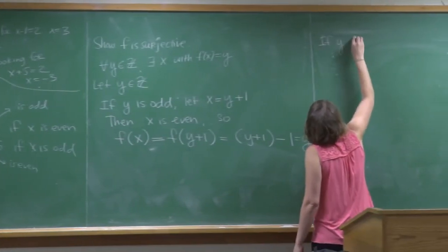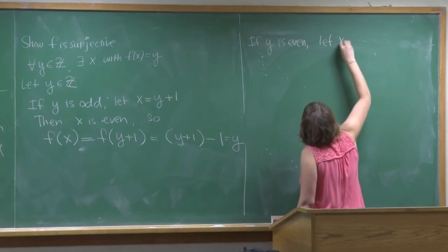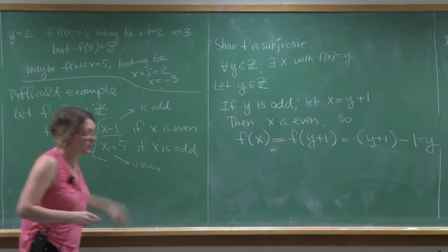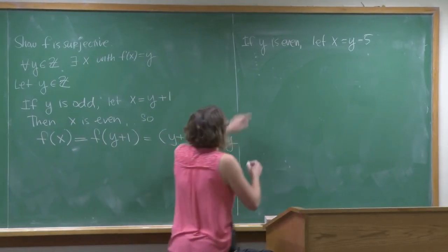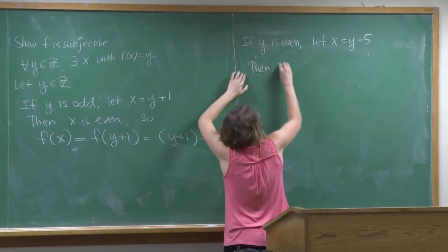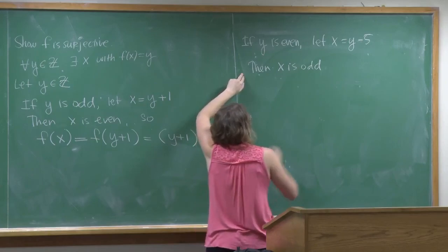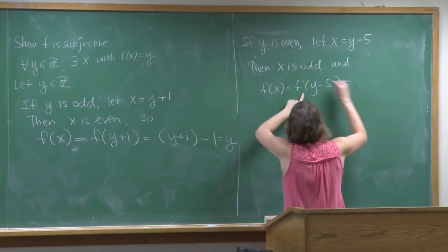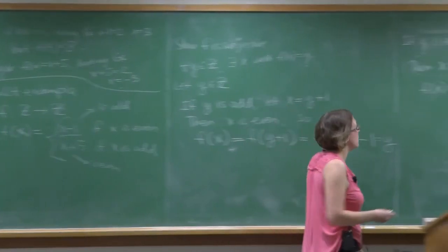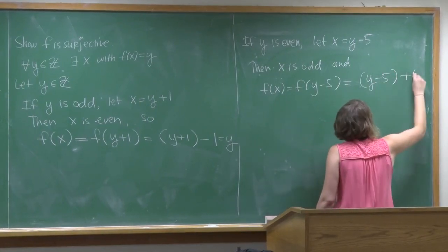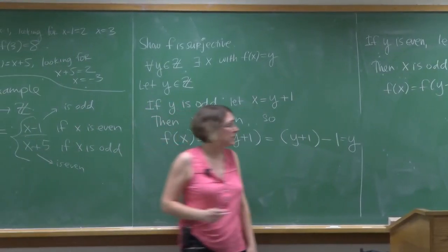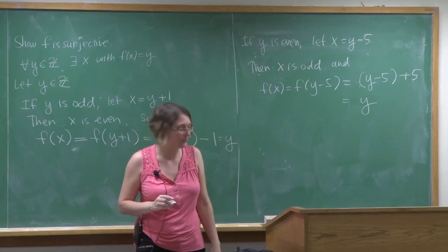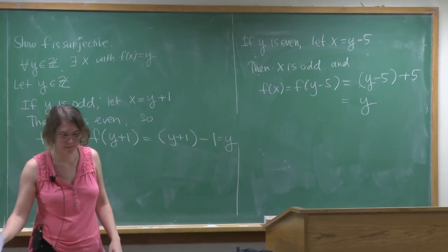Case 2: Y is even. Let X = Y − 5. Then X is odd. So F(X) = F(Y−5) = (Y−5) + 5 = Y. In either case I exhibited an X that maps to Y, so F is surjective.